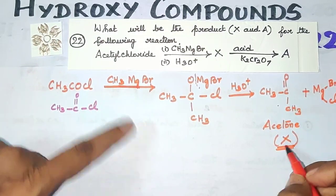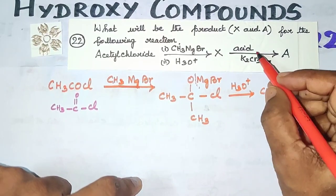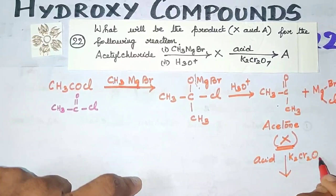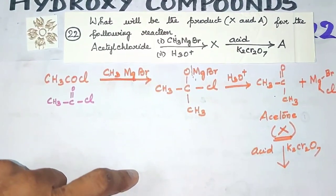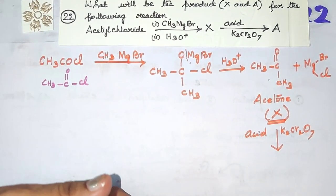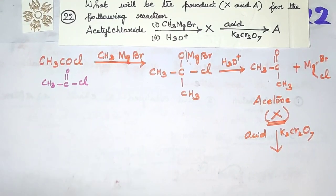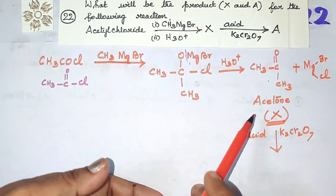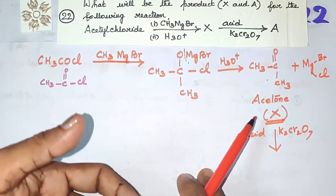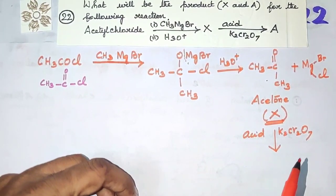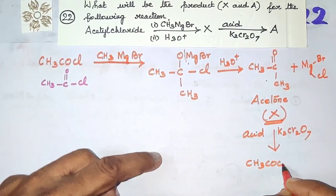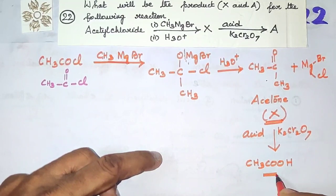X is acetone. Now what are we doing next in the question? We are treating with acidified potassium dichromate, K₂Cr₂O₇. Potassium dichromate is a strong oxidizing agent, so this carbonyl compound gets oxidized into an acid. That acid is acetic acid, CH₃COOH.